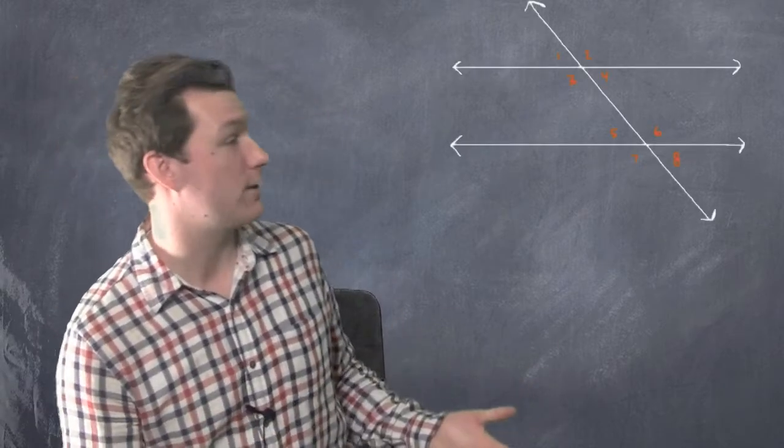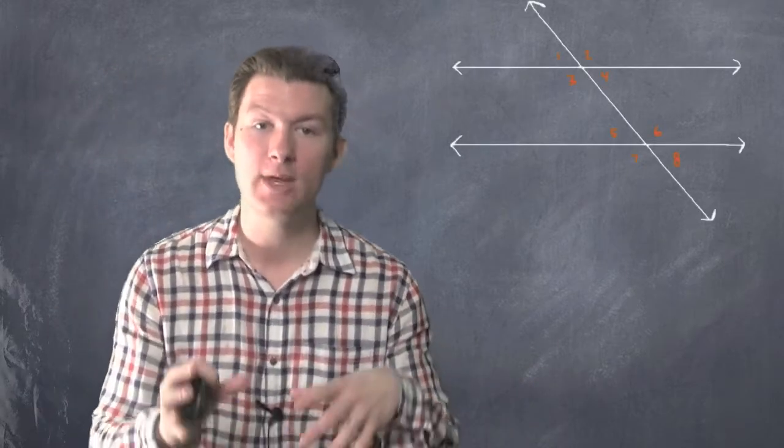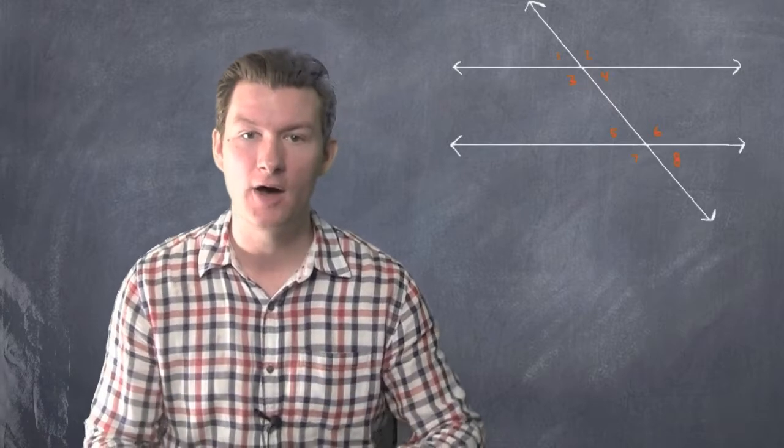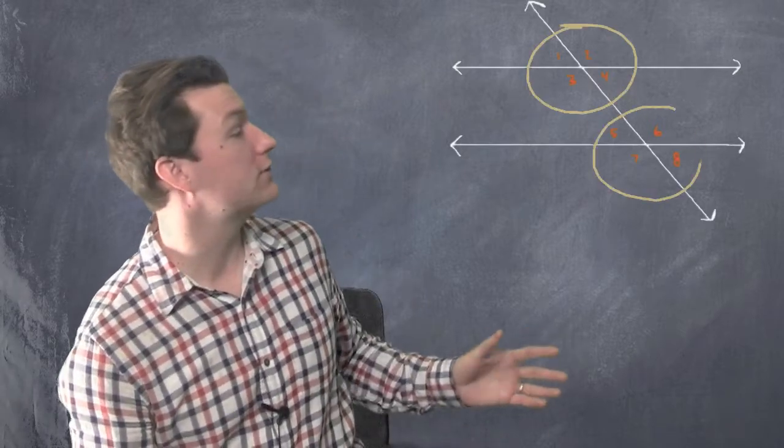So if we have a transversal going through two parallel lines, we've created eight angles. And the way I want you to look at this is we have two sets of four. There's four angles on top and four angles on the bottom.